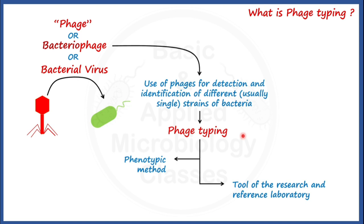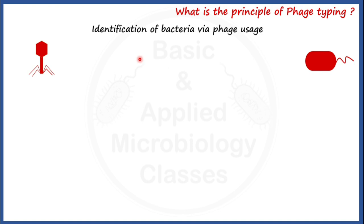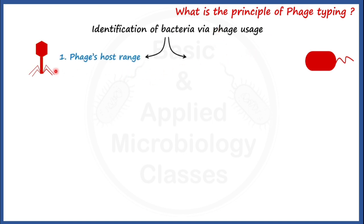Now we are going to talk about the principle of phage typing. Identification of bacteria via phage usage is called phage typing. This phage typing actually depends on two factors. The first one is phage host range, which in turn can be of two types — it can be either broad or restricted.